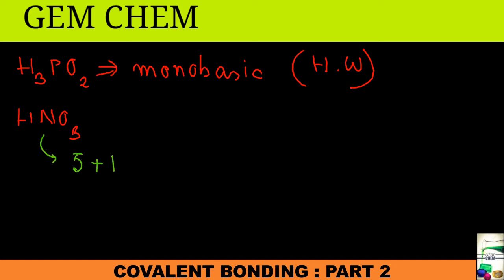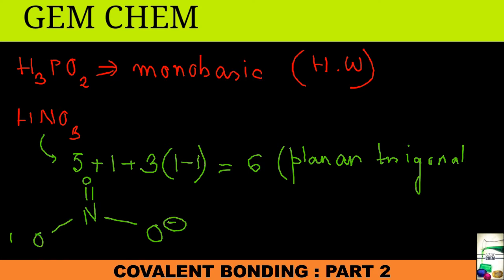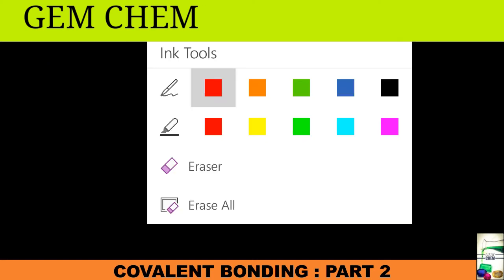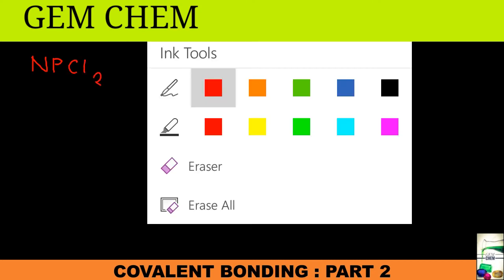For HNO₃, the central atom is nitrogen with 5 electrons, plus 1 from hydrogen, plus 3(1) from oxygen, equaling 6 — planar trigonal. The structure shows nitrogen with two double bonds, one oxygen with a double bond, another oxygen written with a negative charge, one OH group, and a positive charge on nitrogen to neutralize.